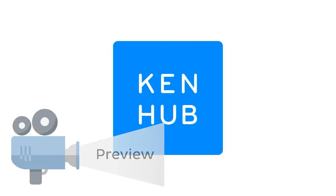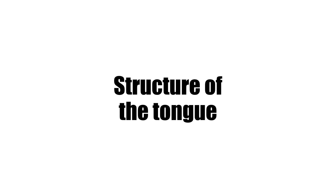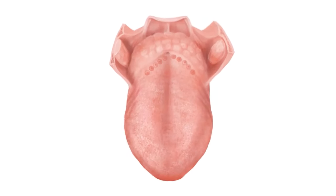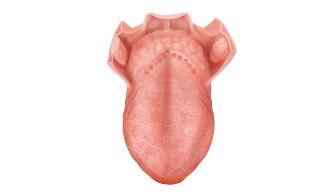Hello everyone, this is Juan from KenHub and welcome to another anatomy tutorial where this time we're going to be talking about the structure of the tongue. To do so, we're going to be looking at this image on the screen, which is basically a superior view of the tongue, also known as the dorsum of the tongue.